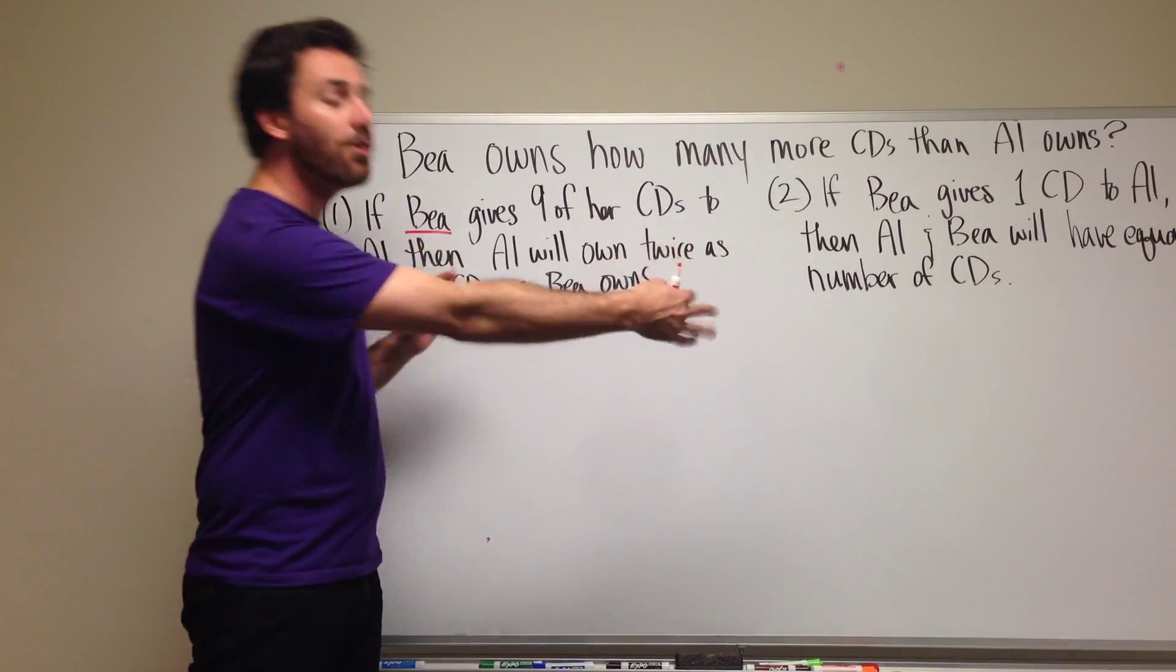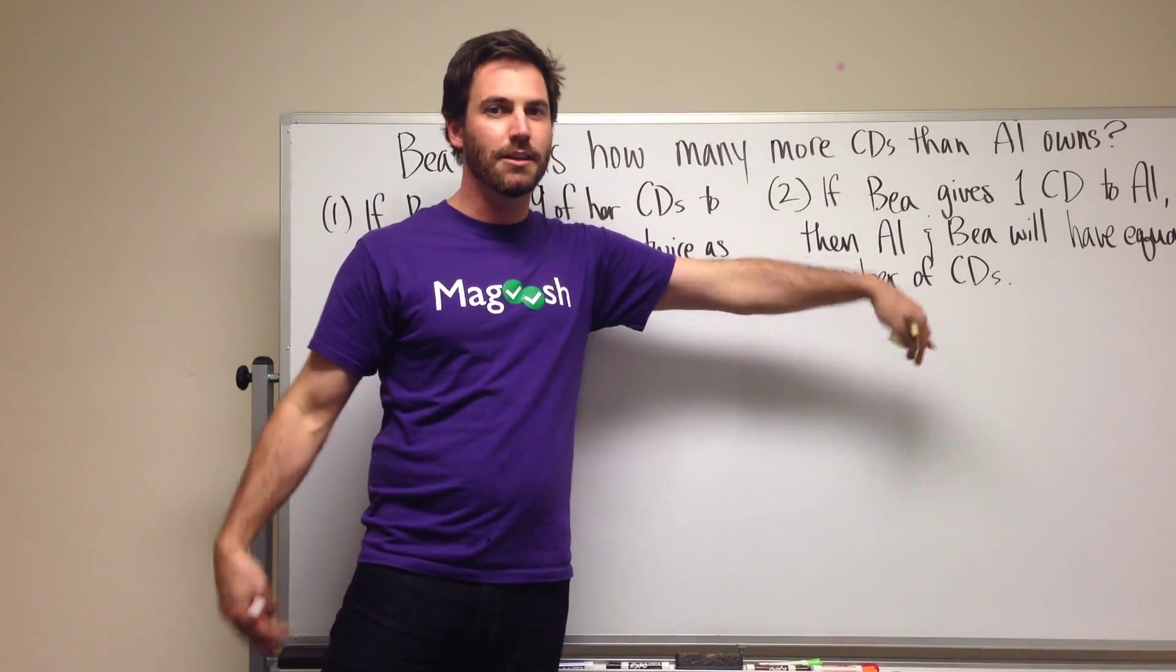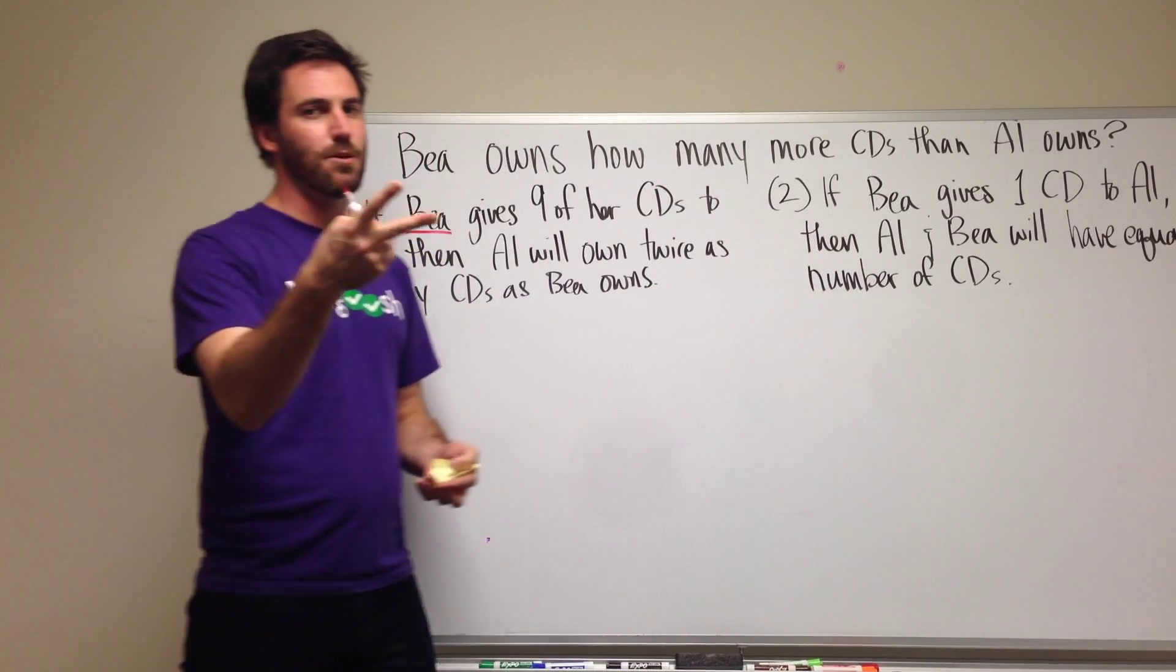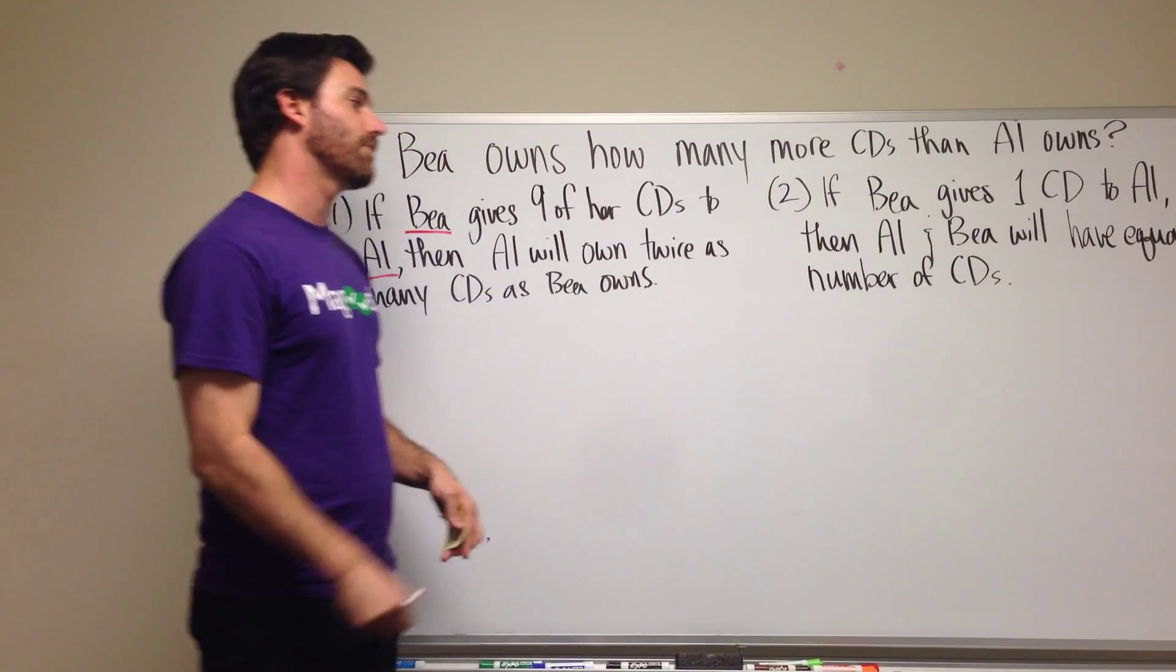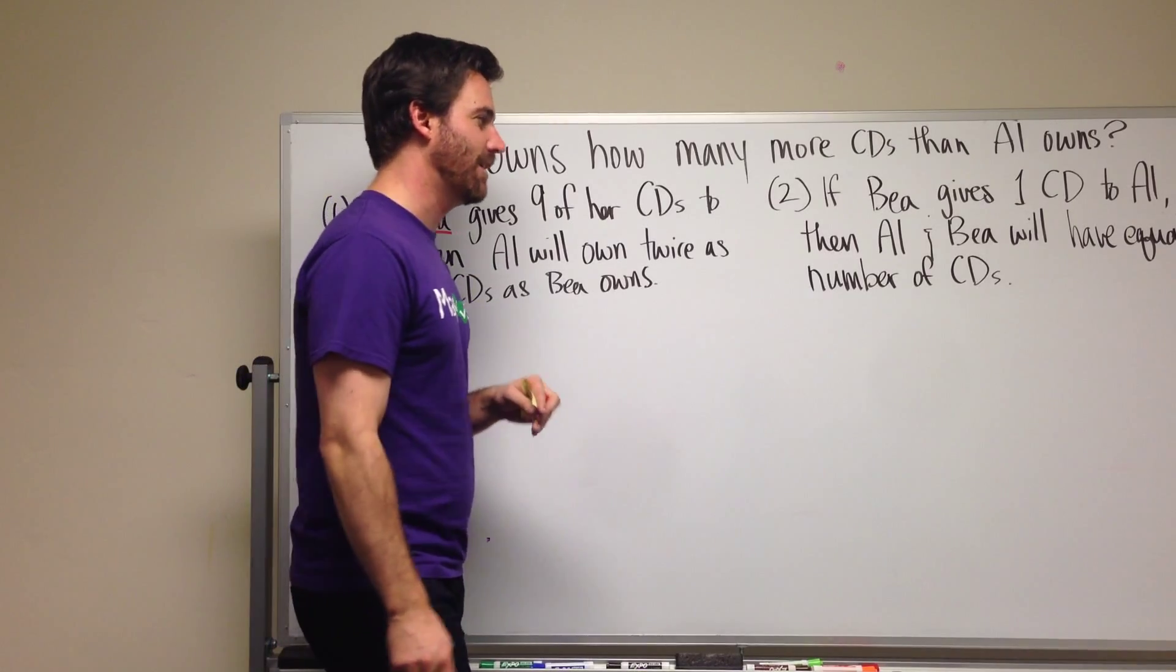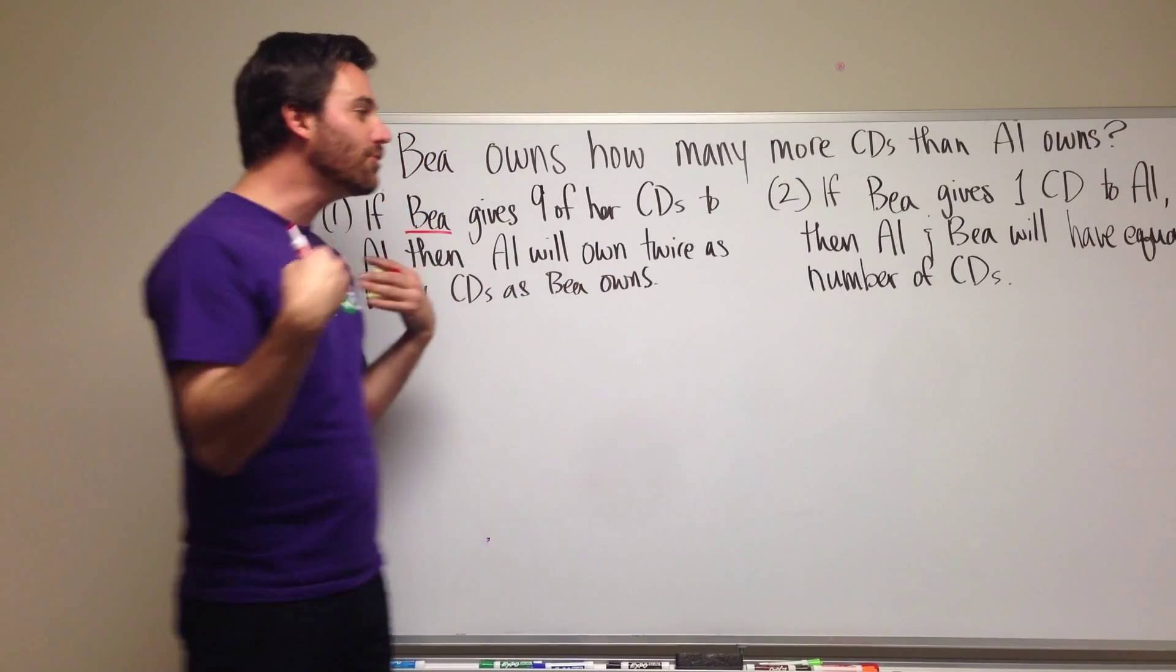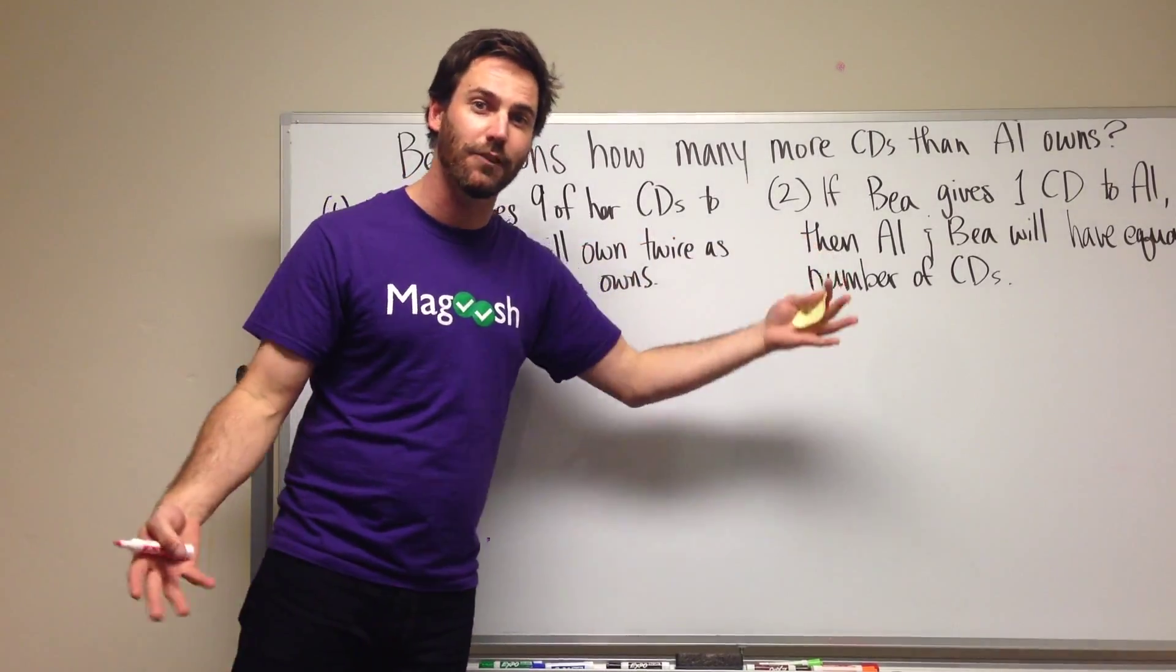Shouldn't you need both pieces of information, this equation and this equation to answer the problem? Which kind of makes sense if you think about it because if you have two variables, you always need two equations to know what those values are. But that is actually the trap in this question - the GMAT people want you to assume you're going to need this statement and this statement to solve the problem.